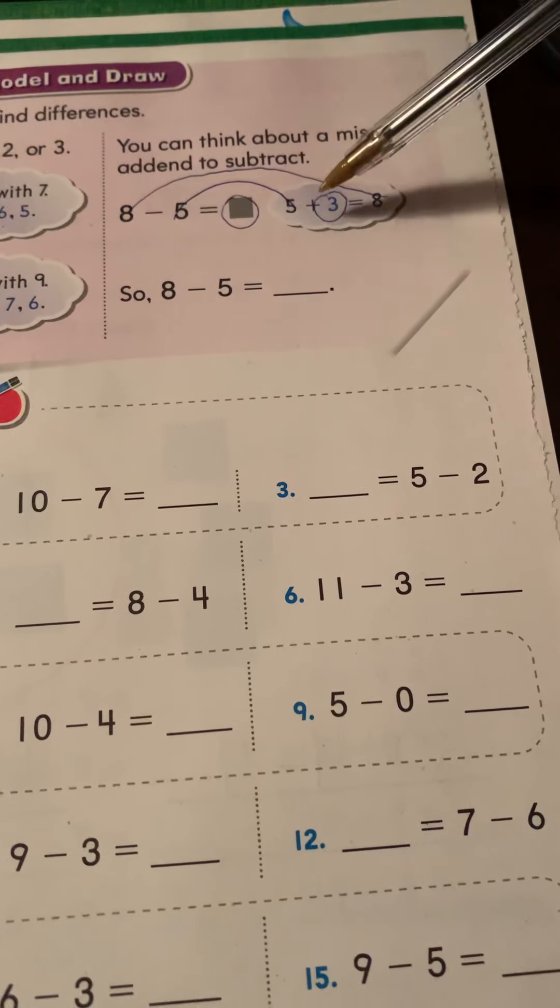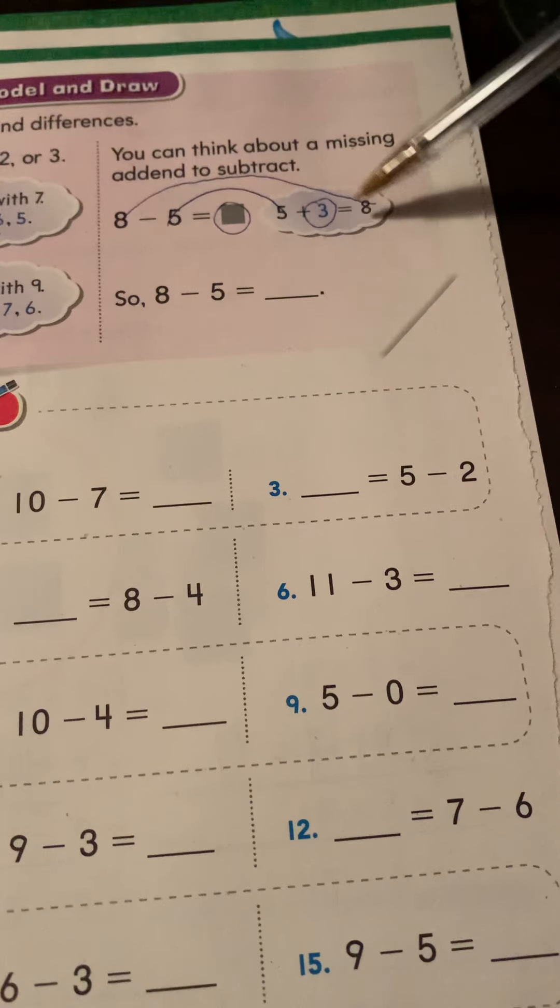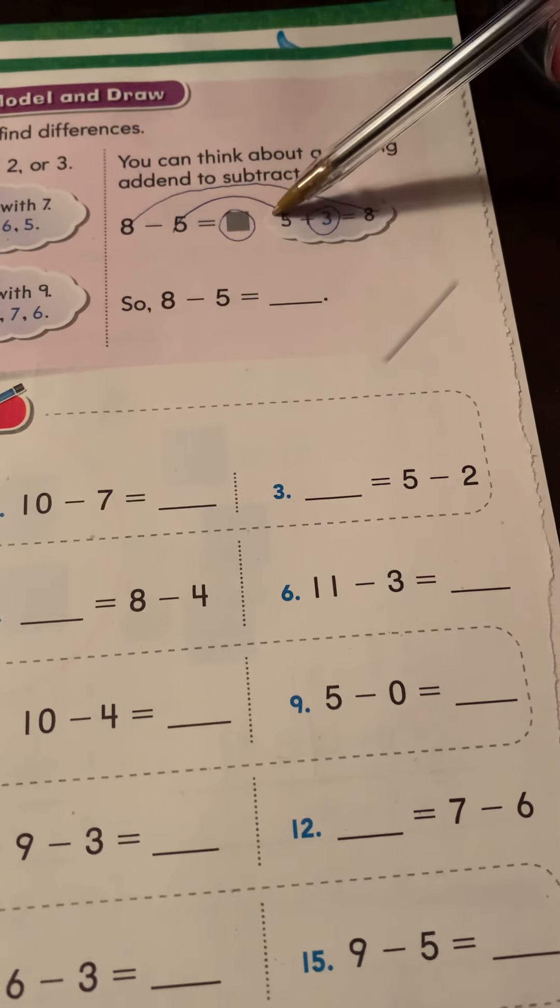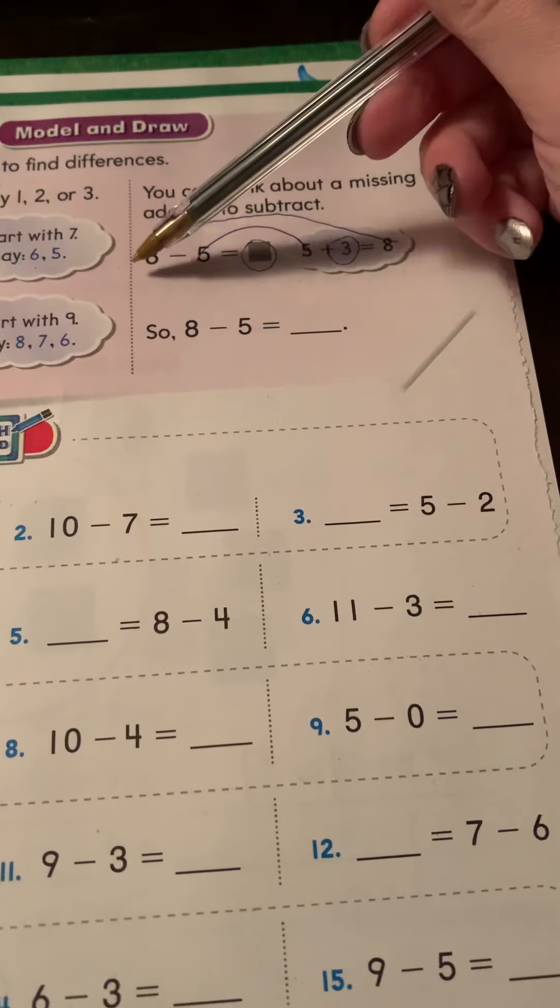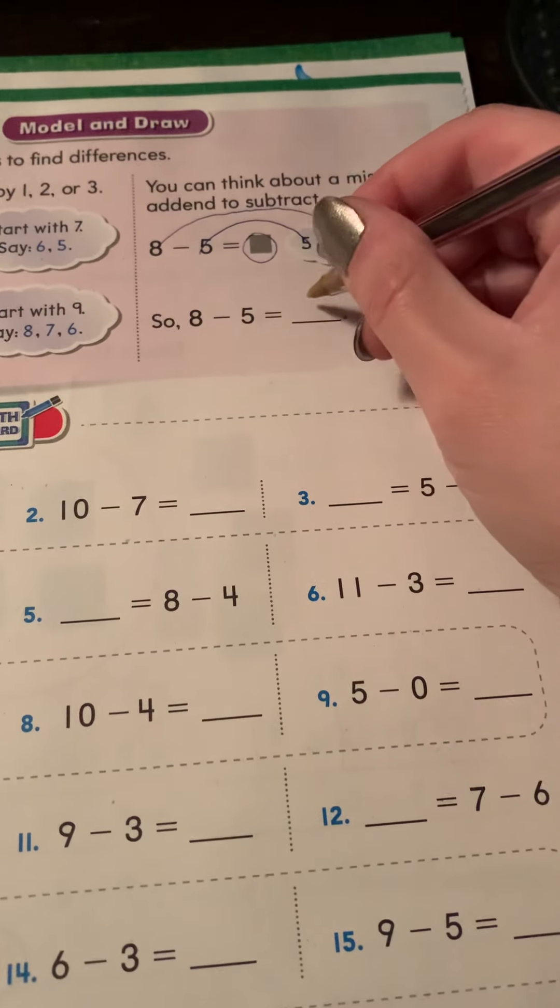That's what we did yesterday in class with our related facts paper. We were figuring out that when we take addition and we flip it backwards, it turns into subtraction. So five plus three is eight forwards. Eight minus three is five. And we know that we can do either order. So eight minus five is also three.